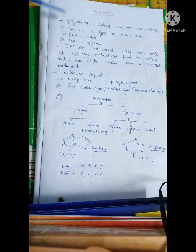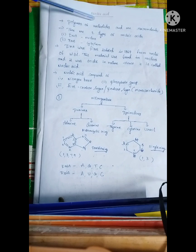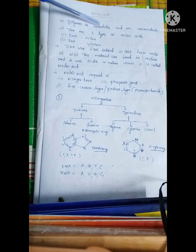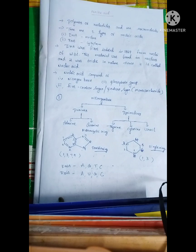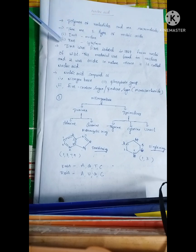Nucleic Acids are called polymers of nucleotides. Nucleic Acids are macromolecules, not micromolecules. And Nucleic Acids are of two types: DNA and RNA.